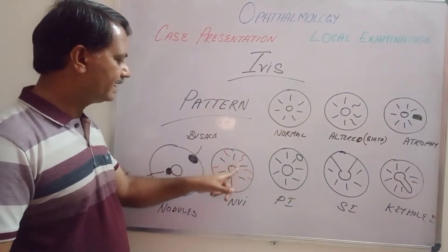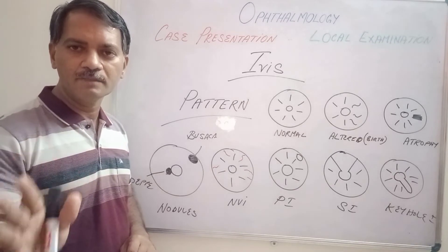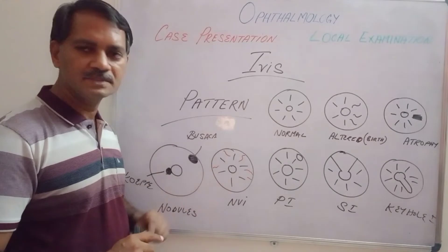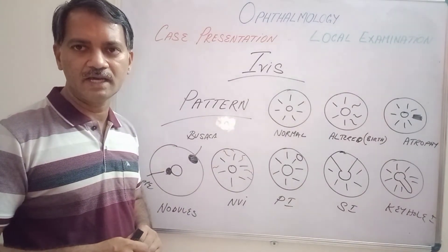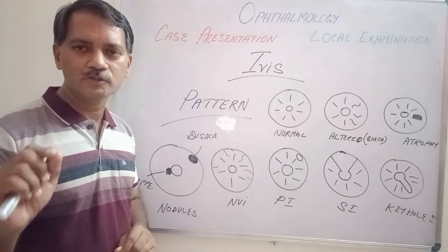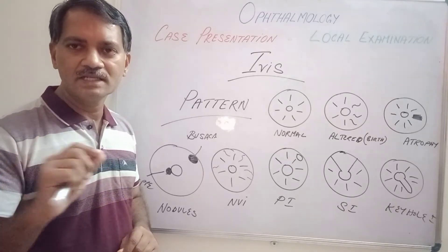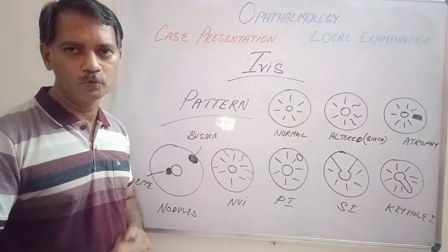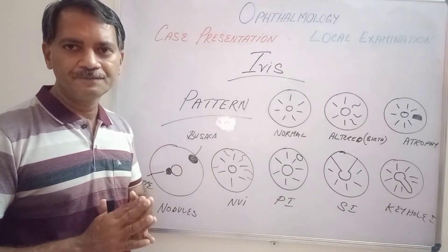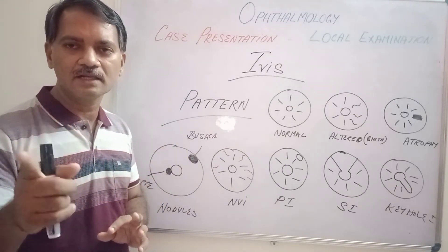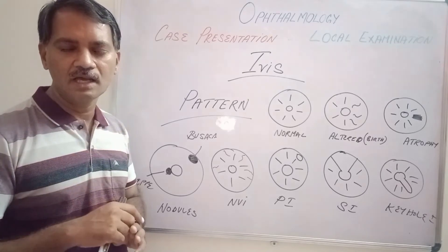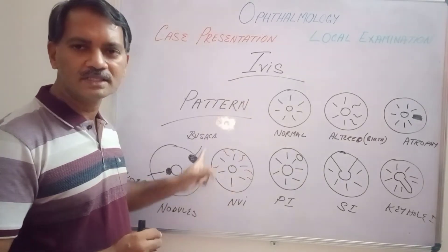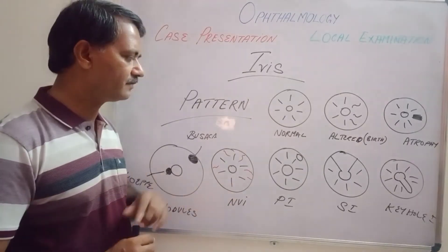Next, you can see red lines on the surface of the iris. Normally vessels are not visible in the iris, but sometimes vessels may be visible on its surface. This is called neovascularization of the iris. It is usually seen in diabetic retinopathy and central retinal vein occlusions. Ischemia of the retina leads to release of vascular endothelial growth factors which come to the anterior chamber and stimulate the iris to form new vessels.